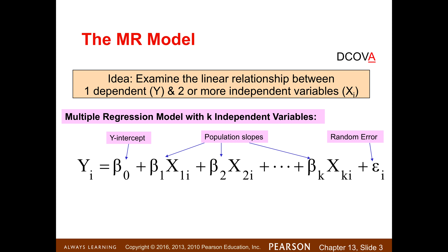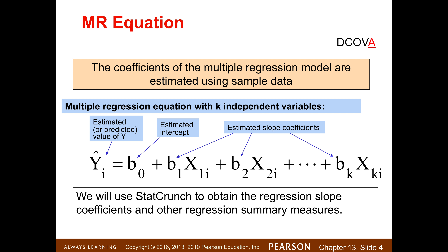The multiple regression model just allows you to include two or more predictor variables or independent variables. From here on out, predictor variable and independent variable are interchangeable. The model is Y sub i = β₀ + β₁X₁ᵢ + β₂X₂ᵢ plus a random error term. That describes the relationship for the entire population. When we use sample data, we create estimates of these parameters — we estimate or predict Y using the intercept and estimated slope coefficients. We'll use StatCrunch to obtain these regression coefficients and other summary measures.